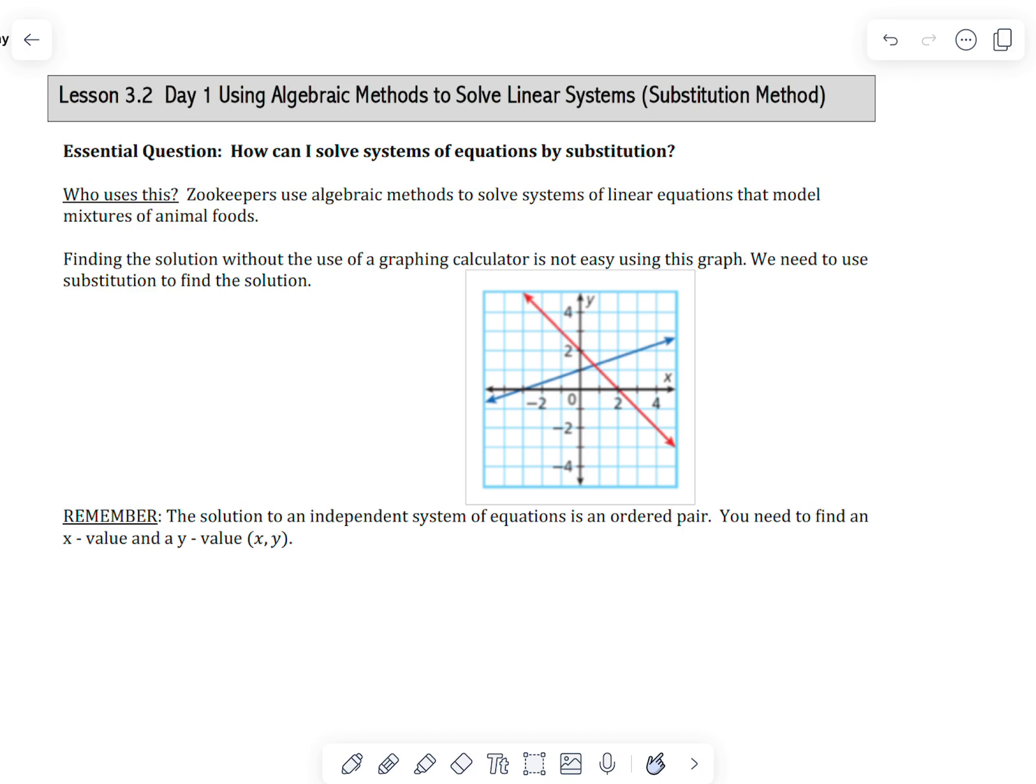All right, this is on solving a system using substitution method. So we've used the graphing calculator to find out if they have a solution and what that ordered pair might be.